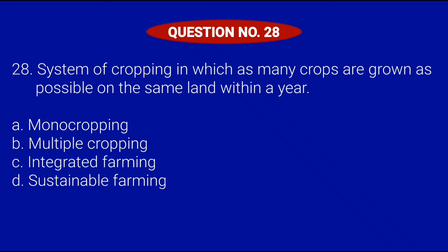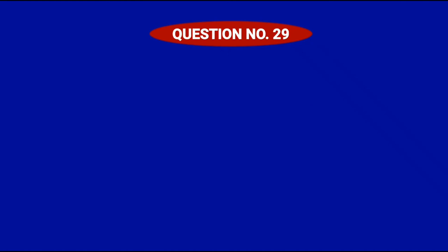Question number 28. System of cropping in which as many crops are grown as possible on the same land within a year. Letter A, Monocropping; Letter B, Multiple cropping; Letter C, Integrated farming; or Letter D, Sustainable farming. Correct answer is Letter B, Multiple cropping.